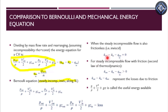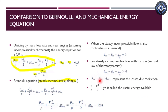If the flow is frictionless, Q-dot net in could be zero if the rate of heat transfer in and out of the system is equal, or if the process is adiabatic. For steady incompressible flow with friction, according to the second law of thermodynamics, the quantity ũ-out minus ũ-in minus q must be greater than zero — this represents losses due to friction. The term p/ρ + V²/2 + gz is called the useful energy available, and this friction term is called the friction losses.